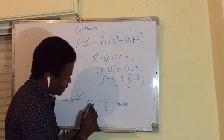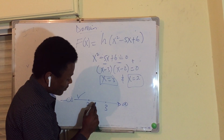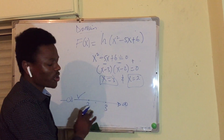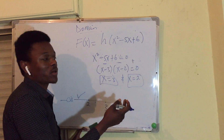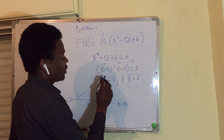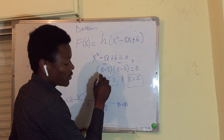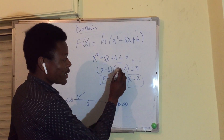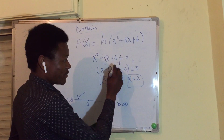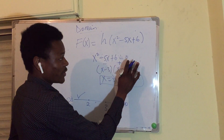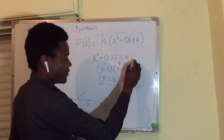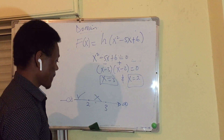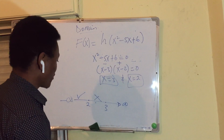Now let us test x = 2.5, which is in the interval between 2 and 3. We get 2.5 - 3 = negative, and 2.5 - 2 = positive. Negative times positive is negative — so this interval is not acceptable.